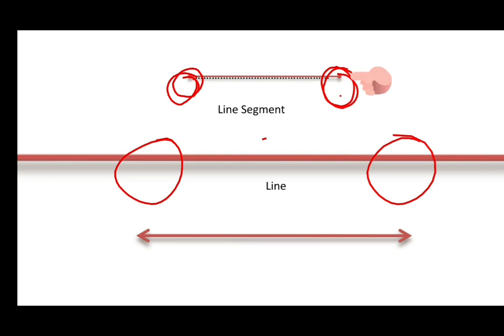So, line segment has two endpoints, and the line has got two arrows on both sides. It shows it can be extended.